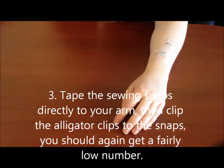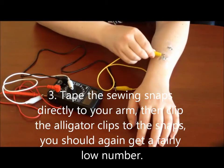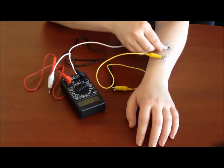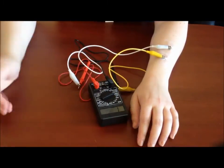And now we're going to measure the body's resistance once again by taking each end of the alligator clip and clipping it to the sewing snap. And then we're going to see what our digital multimeter says and then we're going to write that down.